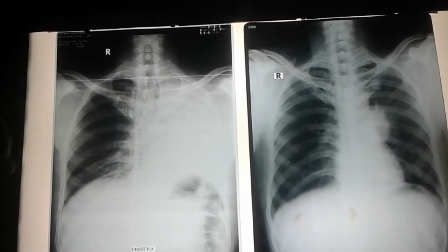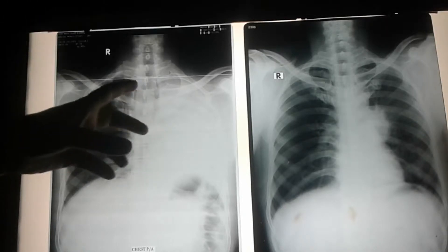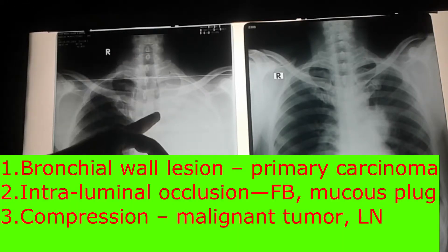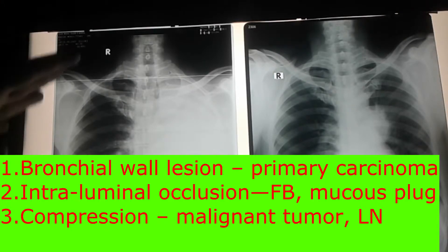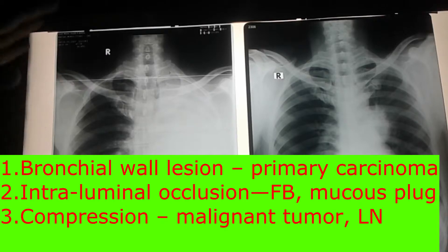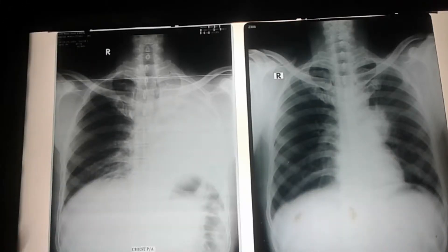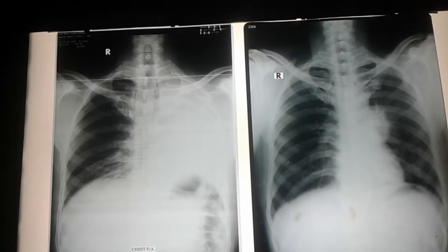In absorption collapse, something like a mediastinal mass, hilar lymphadenopathy, endobronchial lesion, foreign body, mucus plug, or an intramural lesion — anything arising from the bronchial wall — may obstruct the lumen. When the bronchial lumen is obstructed, air cannot flow into the distal alveoli, and those distal alveoli collapse.